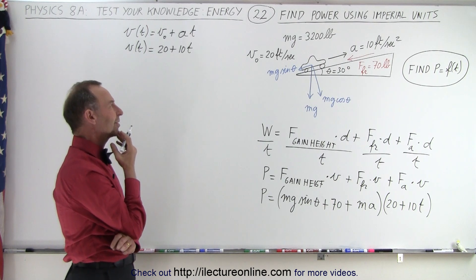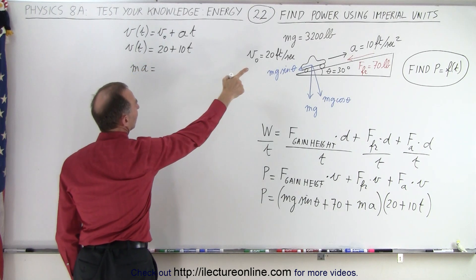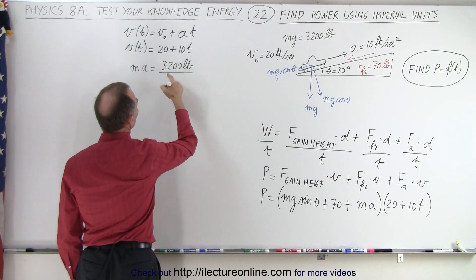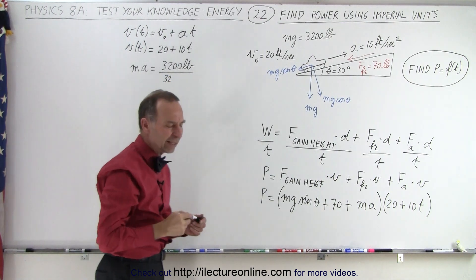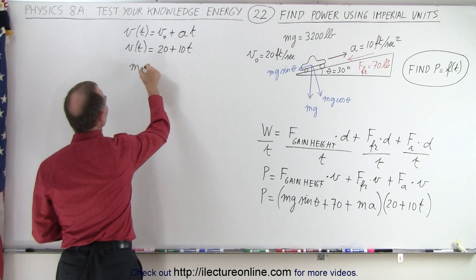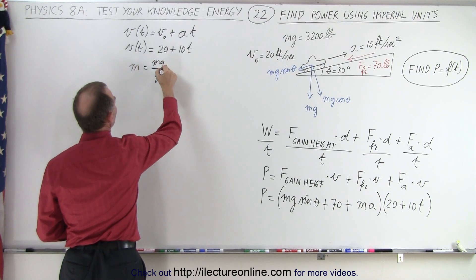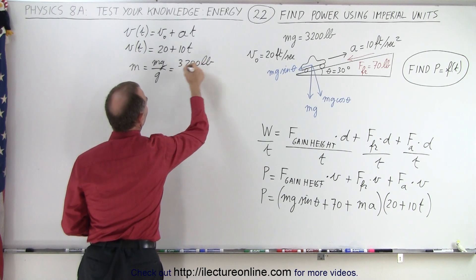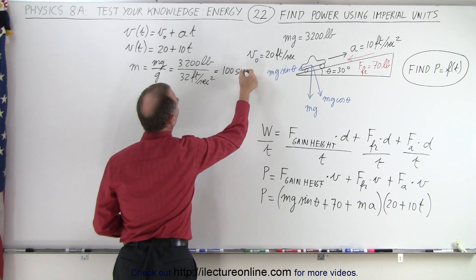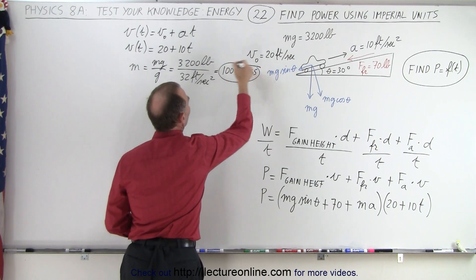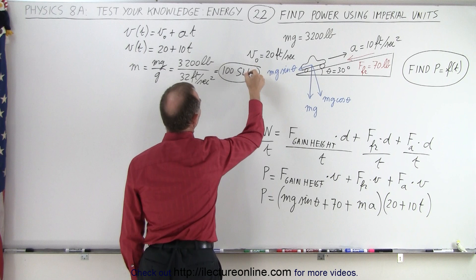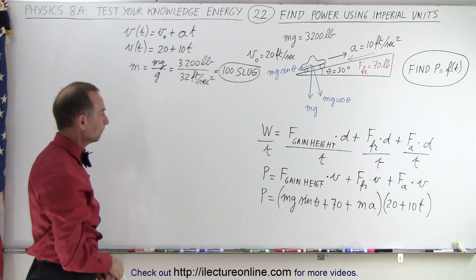Mass times acceleration: the mass equals weight divided by g, so that's 3200 pounds divided by 32 feet per second squared, which equals 100 slugs. The British or imperial unit for mass is slugs — yes, you heard that correctly — and it's not those little animals in your vegetable garden. We just call them slugs: same name but a different thing.